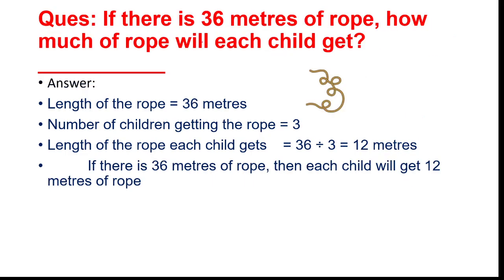Moving to the next page. If there is thirty-six metres of rope, how much will each child get? The number of children is three. So thirty-six divided by three equals twelve metres. Each child gets twelve metres of rope.